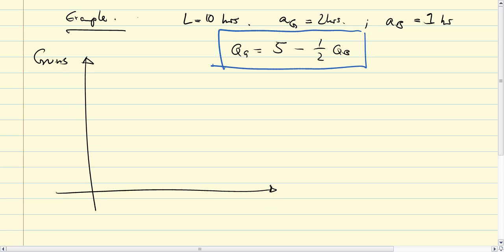Let's draw this. Guns on this axis and butter on this axis. If we produce zero butter, we'd have 5 guns. If we have zero guns, we'd have 10 barrels of butter. We have these two points and a linear function with a slope of minus 1 half.